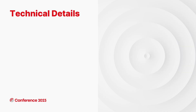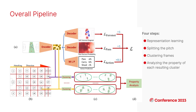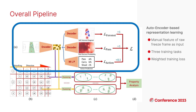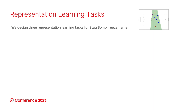Now let me introduce the technical details. Here is an overall pipeline of our method to cluster these frames. It contains four steps: representation learning, splitting the pitch, clustering the frames, and finally analyzing the property of each resulting cluster. In the first stage, representation learning, we use an autoencoder to learn representations for the frames in this StatsBomb data. The model takes in one frame as input and gives three outputs for three different tasks.